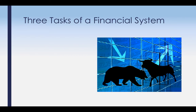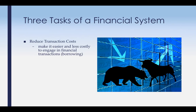There are three main roles of a financial system. The first is to reduce transaction costs. Borrowing could be a costly endeavor if it weren't for banks. Banks make it easy to bring people together and keep transaction costs down. There are websites like Lending Club where lenders come to you. They make it easier and less costly for firms and individuals to borrow money.